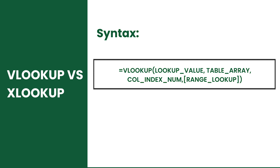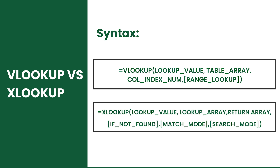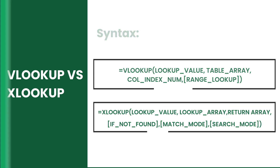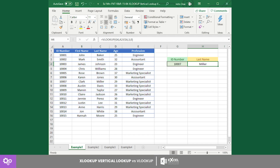Let's start with VLOOKUP. This function performs a vertical lookup using four arguments, where the last one is optional. XLOOKUP, on the other hand, can perform either vertical or horizontal lookup using six arguments, where only the first three are required.